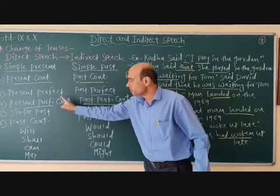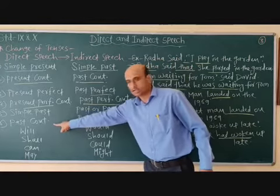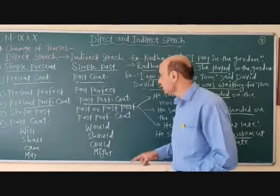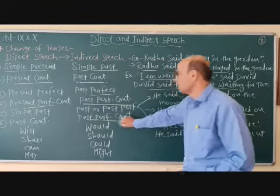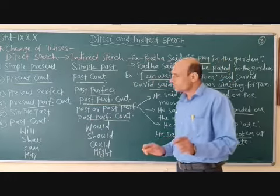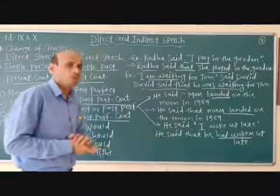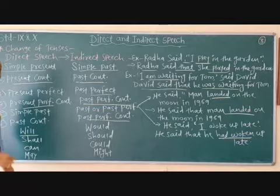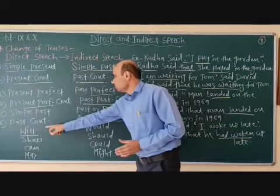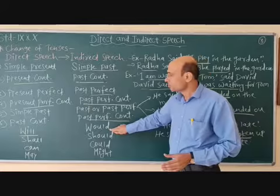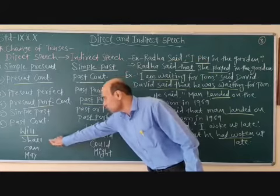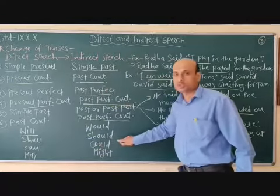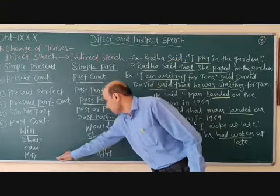Up to this one in the table, if the direct speech sentence is in past continuous, so indirect will be past perfect continuous. Next, a few changes in words: if in direct speech 'will' is coming, so in indirect 'will' becomes 'would'. If 'shall' is there, 'shall' becomes 'should'. 'Can' in indirect speech becomes 'could', and 'may' becomes 'might'.